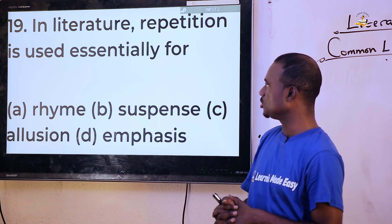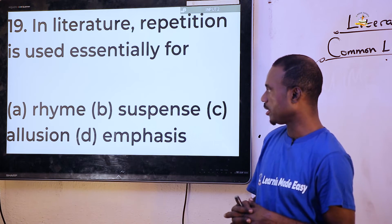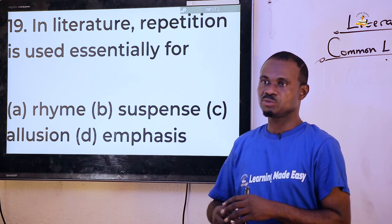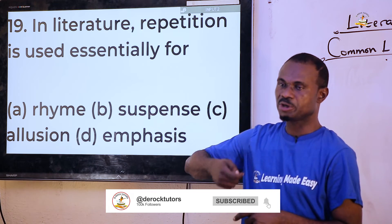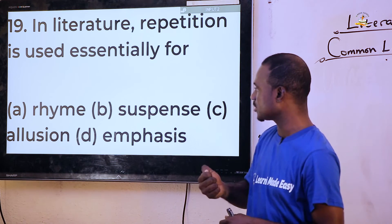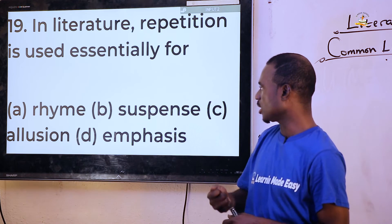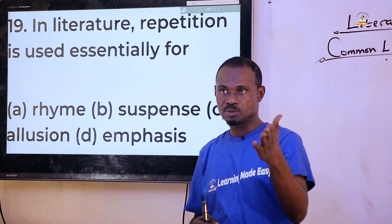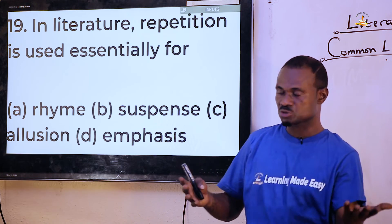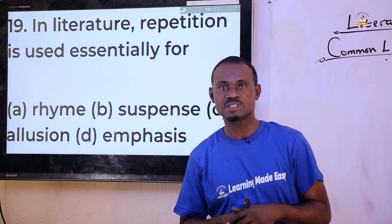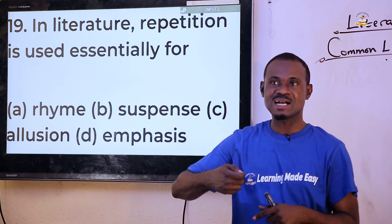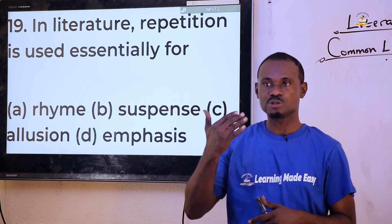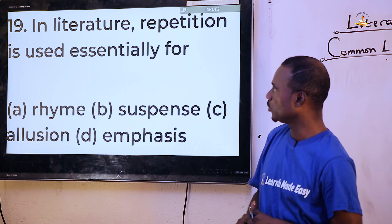Question nineteen: 'In literature, repetition is used essentially for dash.' Options are rhyme, suspense, allusion, and emphasis. Repetition is used when trying to emphasize a particular idea or word in a work of art, especially in a poem. Not suspense — that is for drama. Not rhyme — that is for poems differently. Not allusion. The answer is emphasis, which creates the effect of repetition in the work of art.